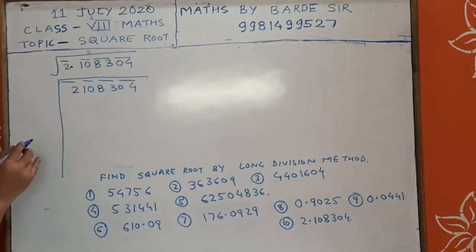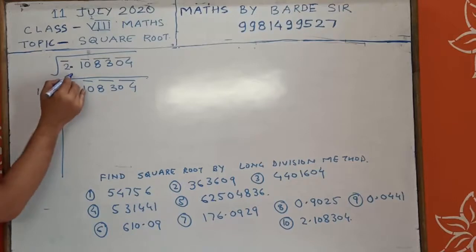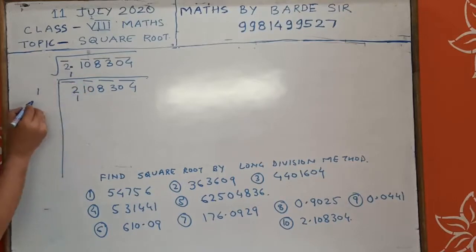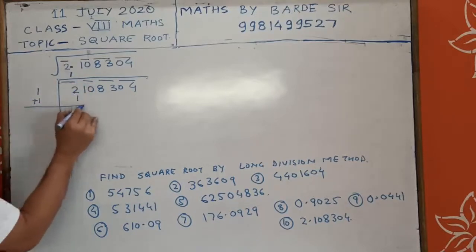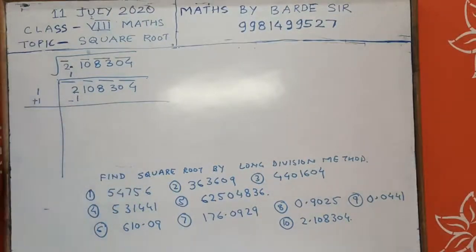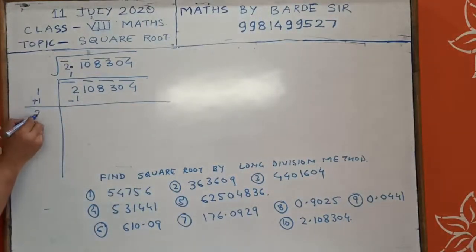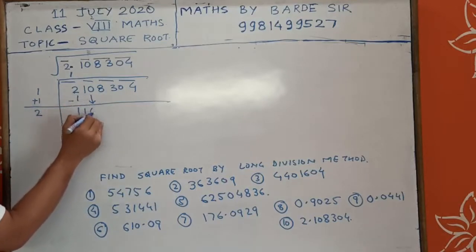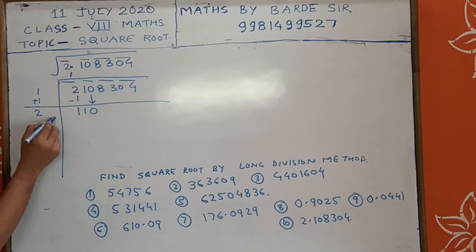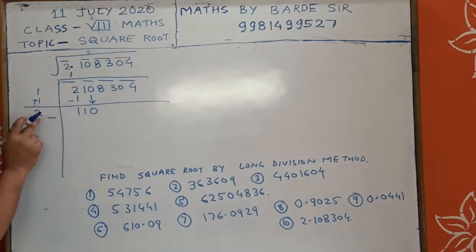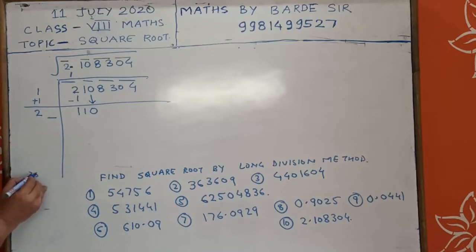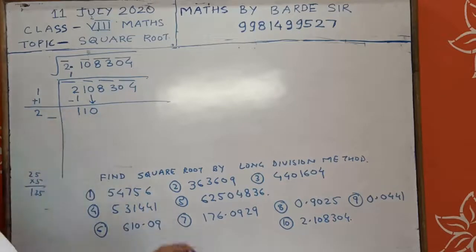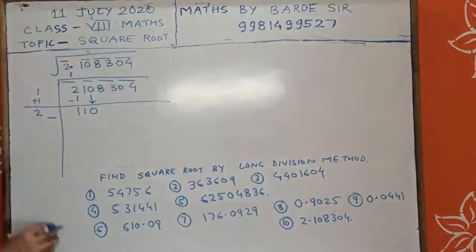2 is the first number. 1 here, plus 1 here — minus 1 here. 1 plus 1 is 2, 2 minus 1 is 1. Copy down the pair 10. Now we try: 2, 5 would give 25 into 5 is 125. So trying 4: 24 into 4 gives 96.